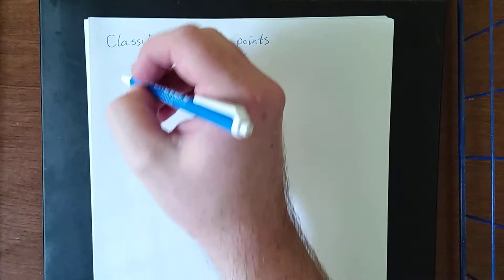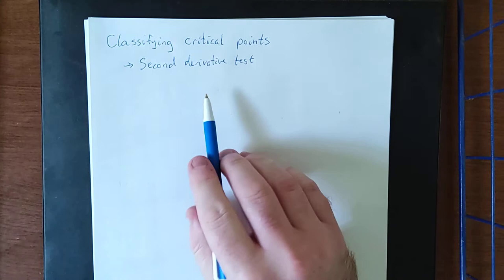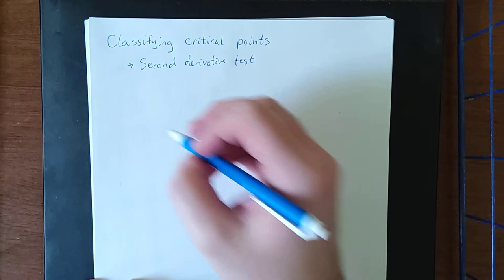In this video we're going to talk about how to actually classify those critical points once we arrive at critical points for functions of two variables. Now this is essentially akin to the second derivative test that we have from back in Calc 1. It is going to be using the second derivatives of a function to determine things like the concavity of the function at a critical point.